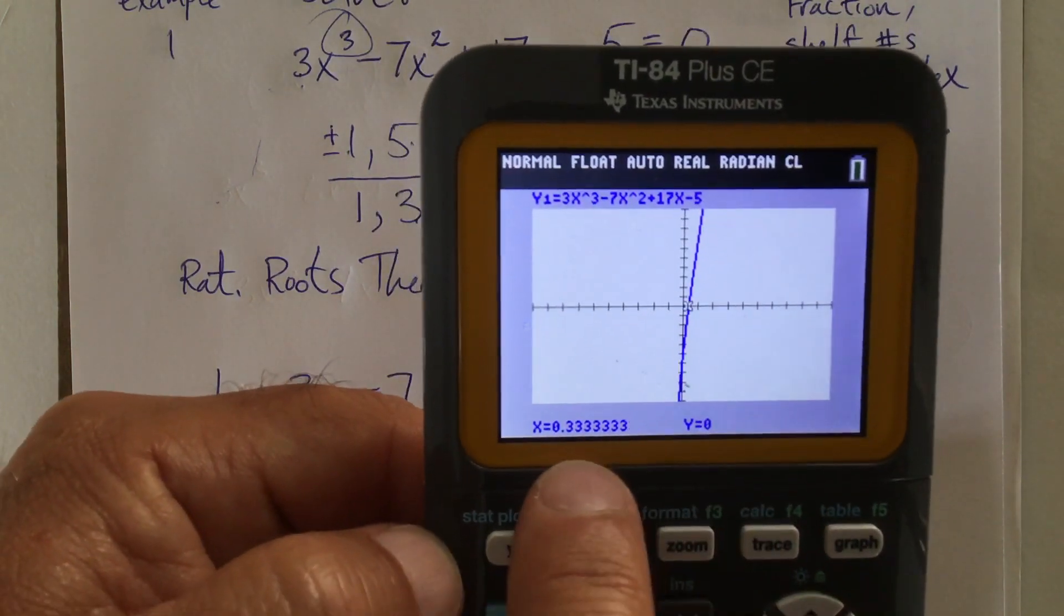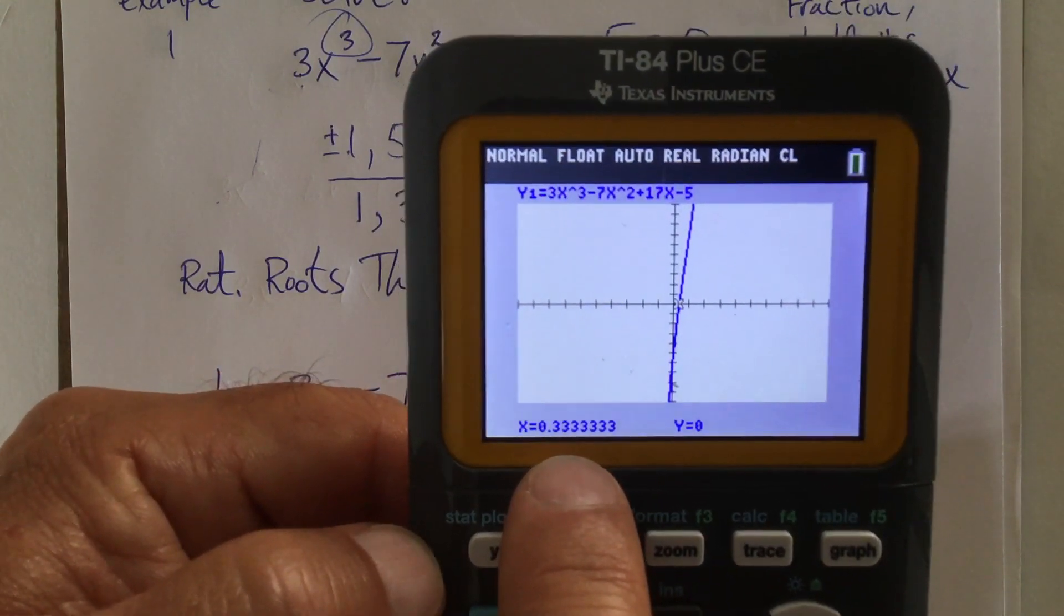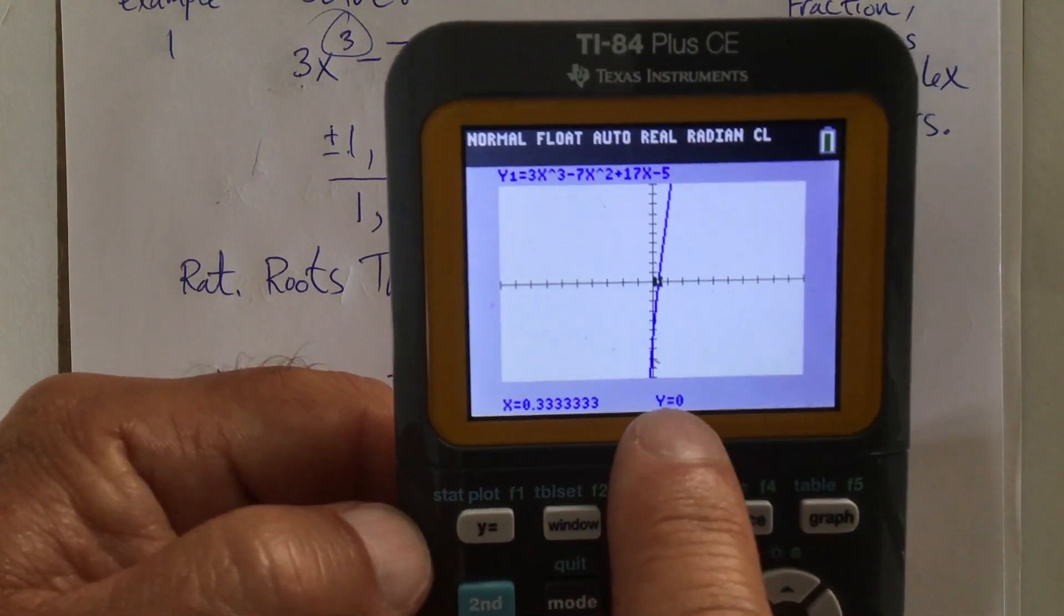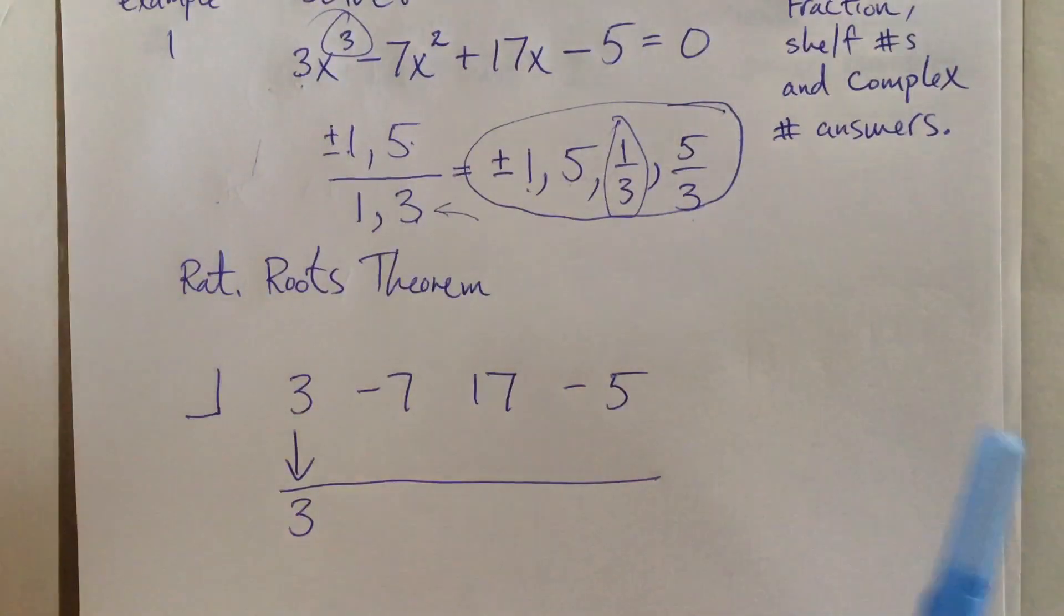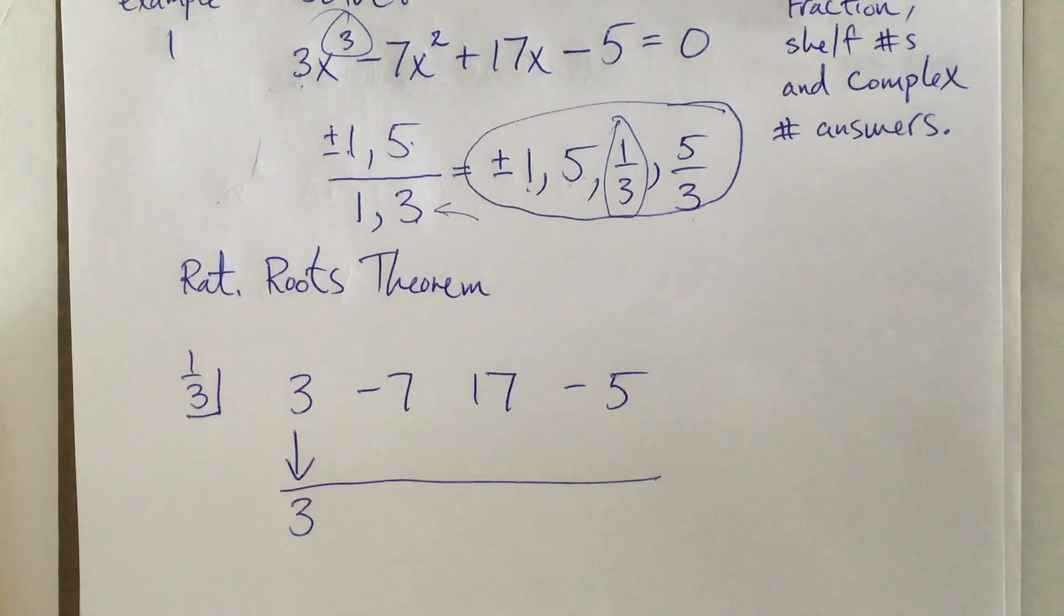And by the way, whenever you enter a fraction, it'll convert it to a decimal. I don't know why it does that, but it does. So 0.3, which is one third. So guess what? I'm going down here. One third is the number I'm going to use in synthetic division, because I do not see any other choice.